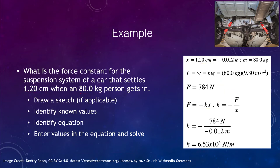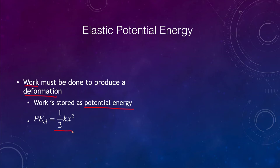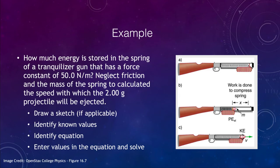We can also consider elastic potential energy. Work is done to produce a deformation, and that work is stored as potential energy — just as we have gravitational potential energy, we also have potential energy stored in a compressed or stretched spring. That elastic potential energy is given by one-half k x squared. For our next example, we're looking for the energy stored in the spring of a tranquilizer gun with a force constant of 50 Newtons per meter.